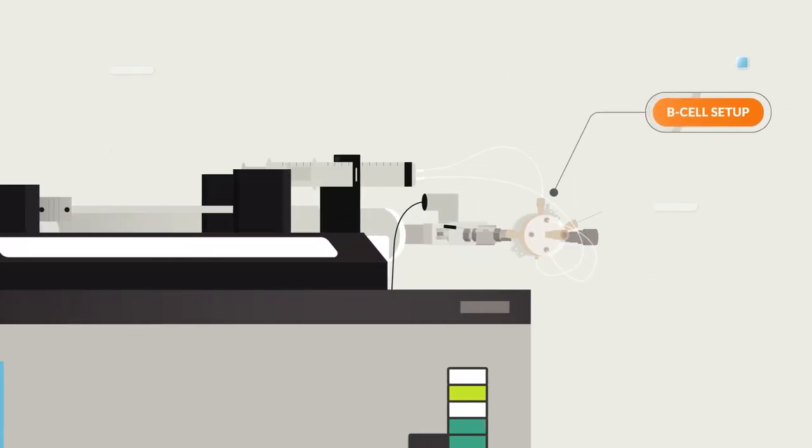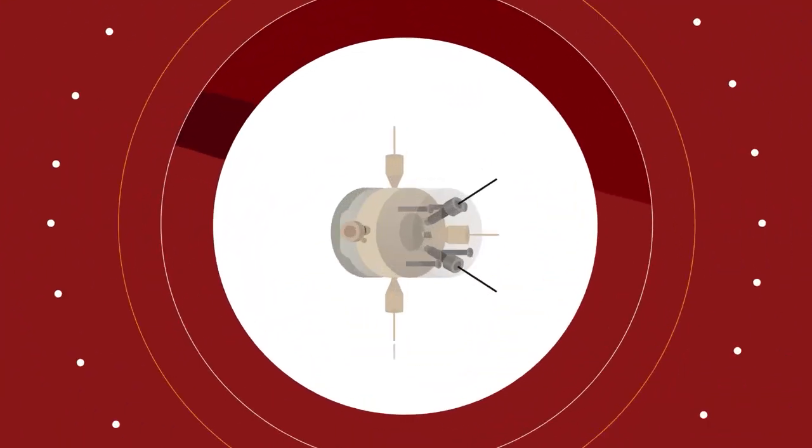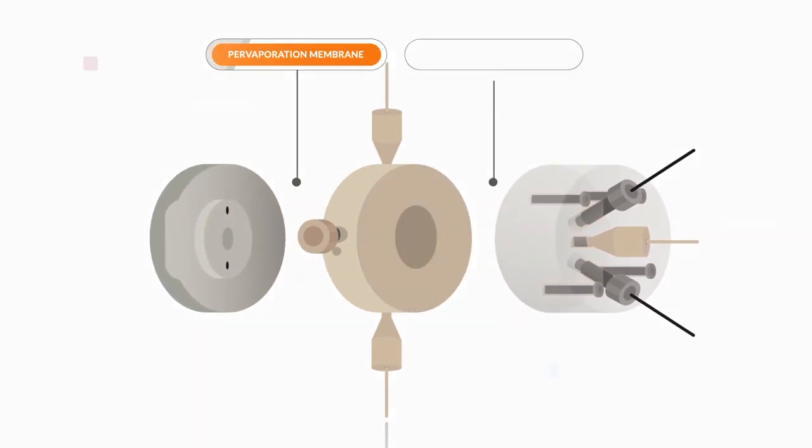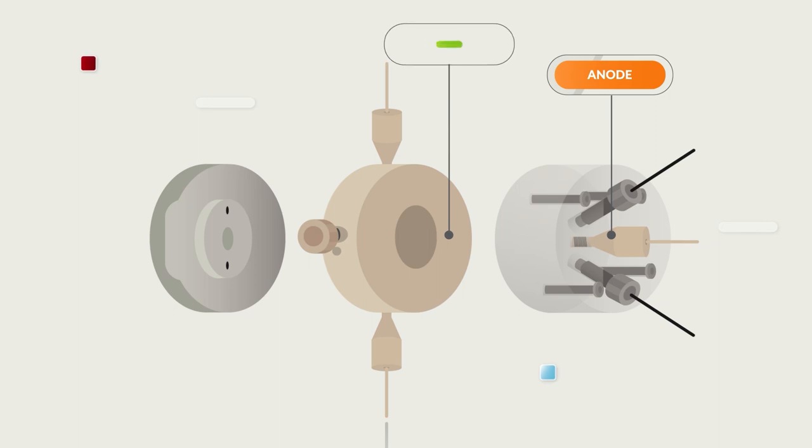The type B cell can be used to monitor continuous faradaic reactions. The dual thin layer design separates the anode and cathode chambers with an ion-conducting membrane.